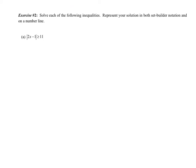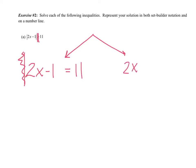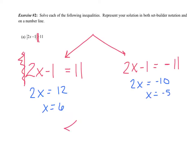Exercise two. Solve each of the following inequalities and represent your solution in set builder notation and on a number line. The absolute value is by itself, so we ignore the symbol, treat it as an equal sign, and write two equations: two x minus one equals eleven, and two x minus one equals negative eleven. Solving: x equals six and x equals negative five. Those are the numbers on my number line.